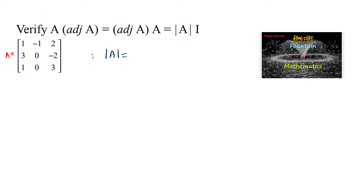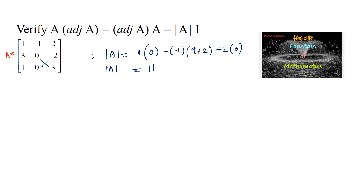The determinant of A: 1 times (0 into 3 minus 0 into -2) is 0, minus of -1 times (3 into 3 minus -2) gives 9 plus 2 = 11, plus 2 times (3 into 0 minus 1 into 0) is 0. So the determinant of A is 11. Now let's find the adjoint of A by finding the cofactor matrix using a shortcut.